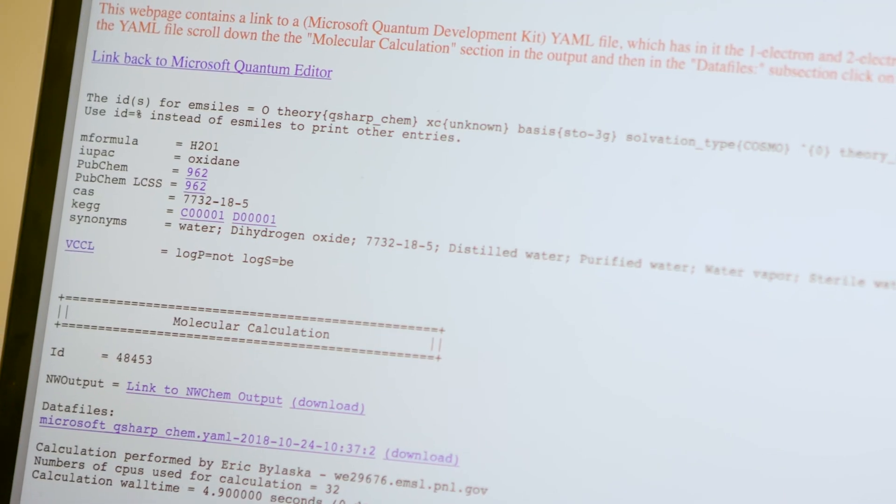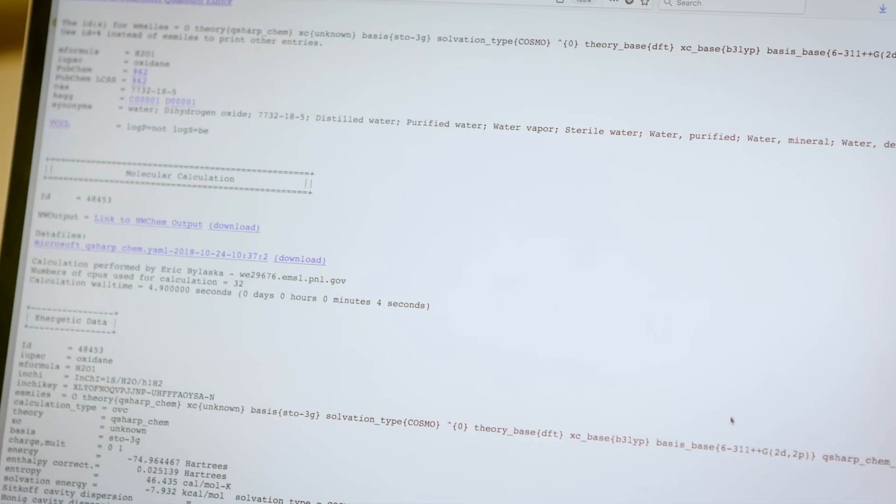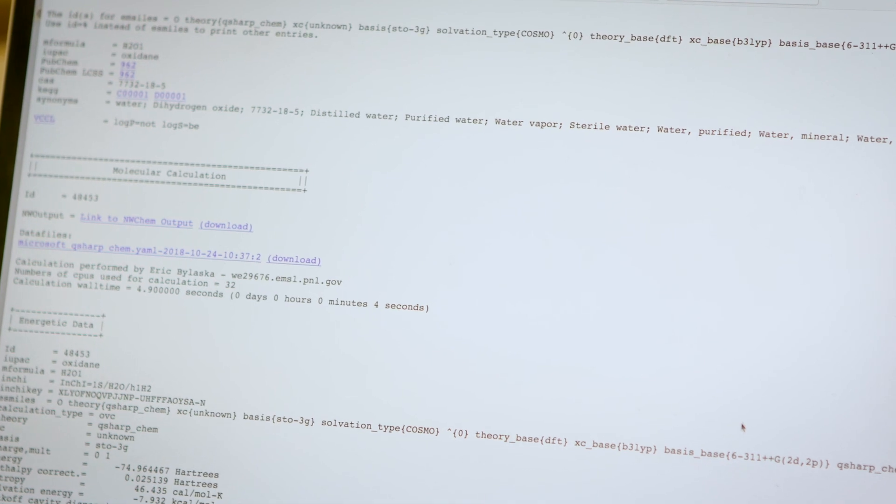NWChem is the flagship Department of Energy computational chemistry code that's being used to analyze molecular electronic structures in various forms in both chemistry and material science.